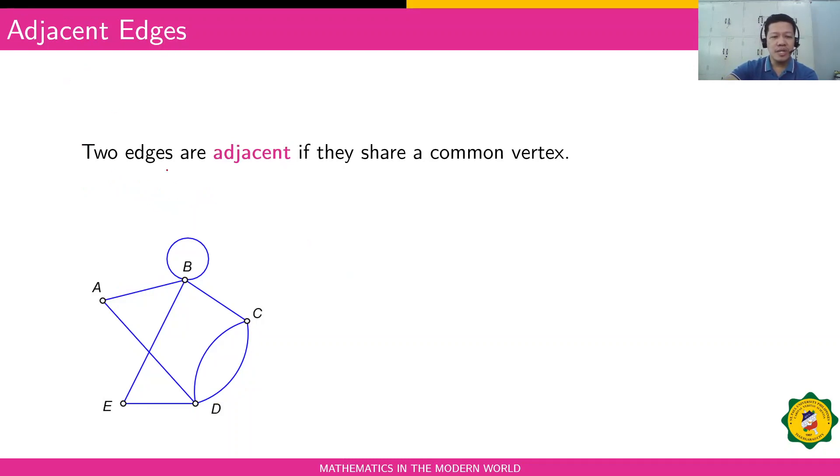Adjacent edges: two edges are adjacent if they share a common vertex. To name an edge, we need to have two vertices. Let's say, for example, edge AB. This one is adjacent to BC because they have a common vertex, which is B. It can also be adjacent to BE. Another one: let's say, for example, edge CD is adjacent to CB because they have a common vertex, that's vertex C.